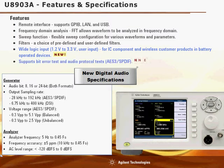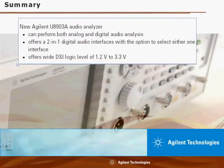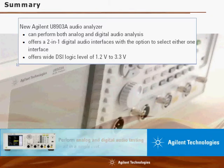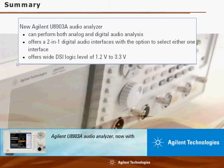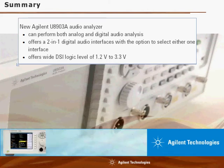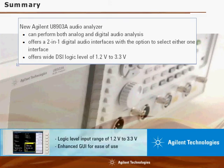The new digital option also supports bit-error tests and audio protocol testing. In summary, the Agilent new audio analyzer can perform both analog and digital audio analysis. With a 2-in-1 digital audio interface, this audio analyzer also offers a wide logic level of 1.2 to 3.3 volts for IC component and wireless customer testing.